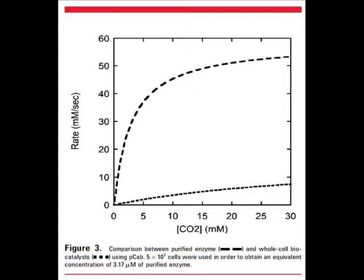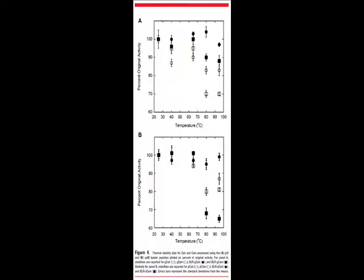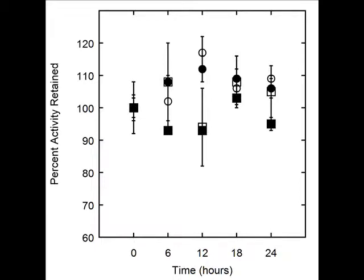This is expected since we have an added transport barrier from the outer membrane of the cell. The trade-off to this loss in activity is that the enzymes are actually stabilized when immobilized in the whole cell. At 95 degrees, a smaller percentage of activity was lost for the whole cells than for their purified enzymes. We also saw that, operationally, the whole-cell catalyst retained 100% of their original activity after 24 hours of use.